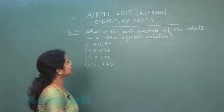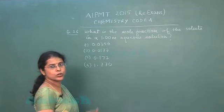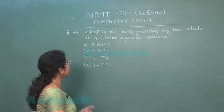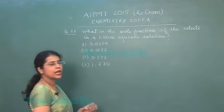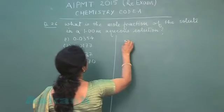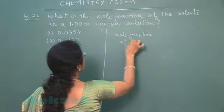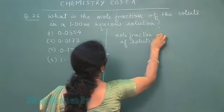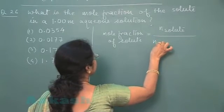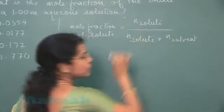Next question is question number 26. What is the mole fraction of the solute in a one molal aqueous solution? Options are: 0.0354, 0.0177, 0.177, and 1.770. We have to calculate the mole fraction of solute, which equals the number of moles of solute divided by the number of moles of solute plus the number of moles of solvent.